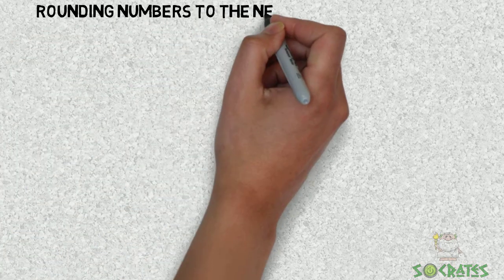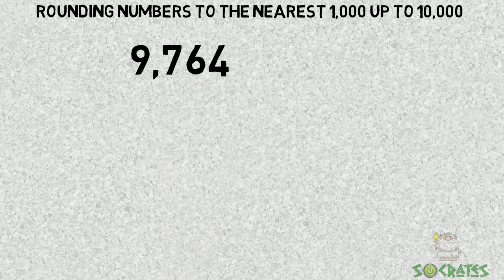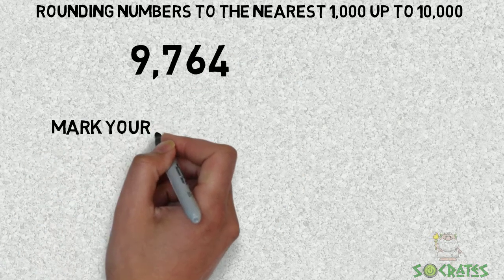Rounding numbers to the nearest thousand up to ten thousand. Let's practice with nine thousand seven hundred and sixty-four.